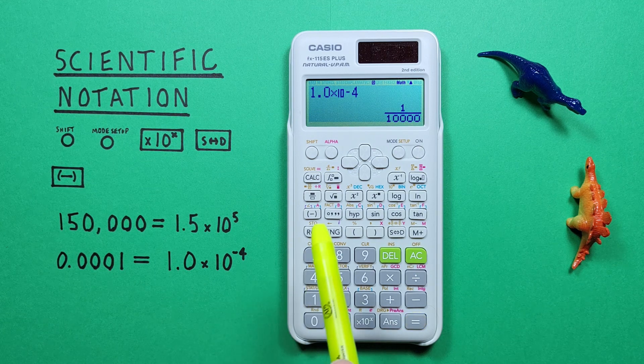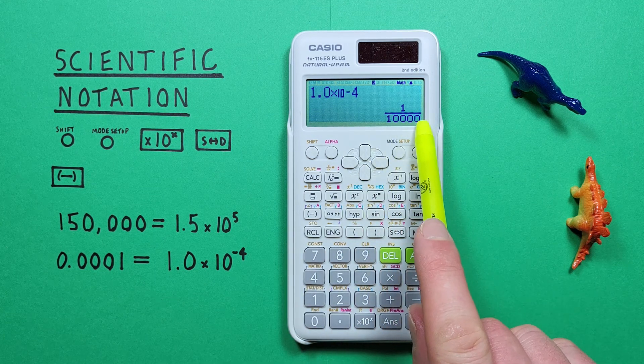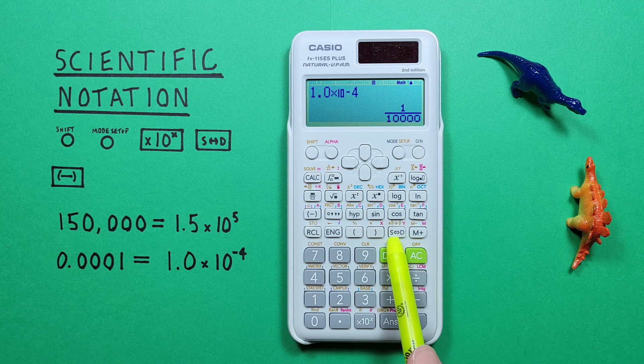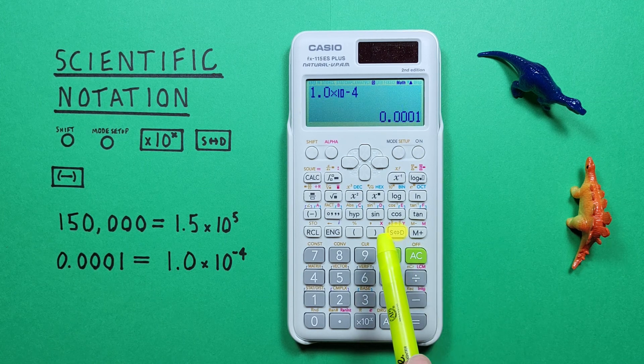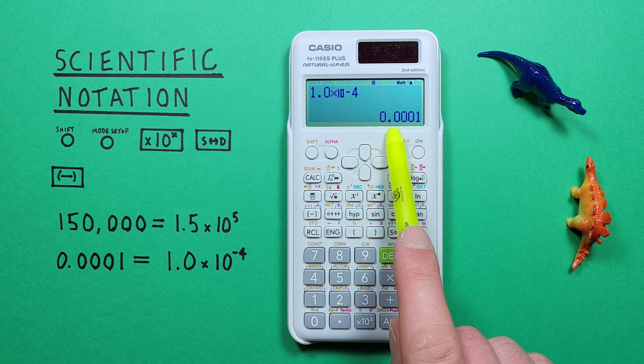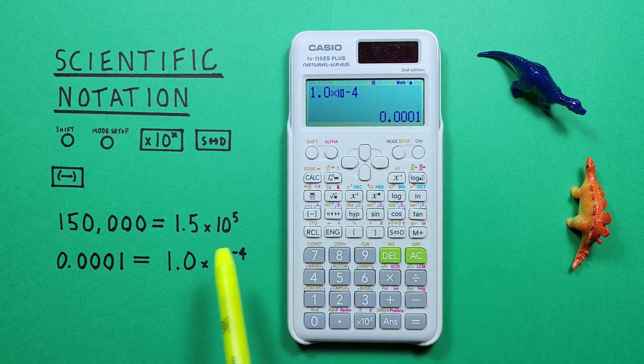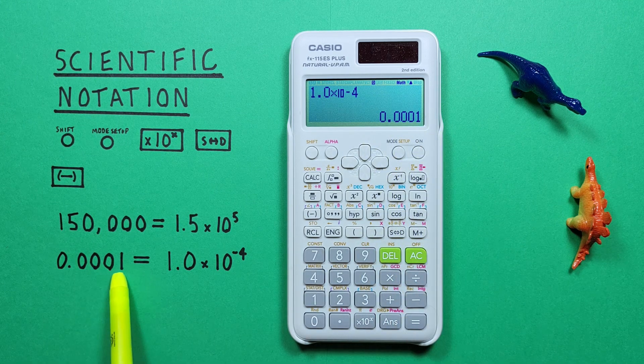And again, this calculator likes to give us fractions. But we can convert that to a decimal with our S to D key. And we see we get a result of 0.0001, which is correct.